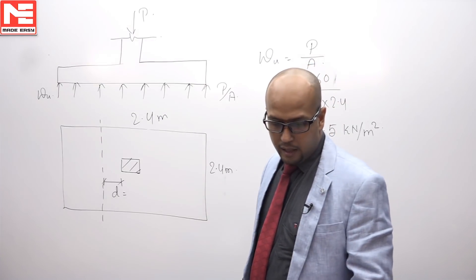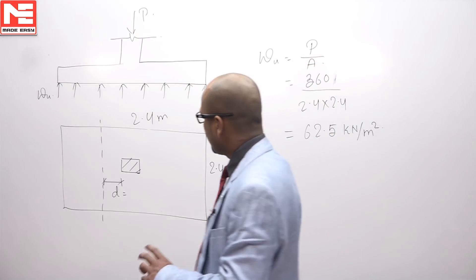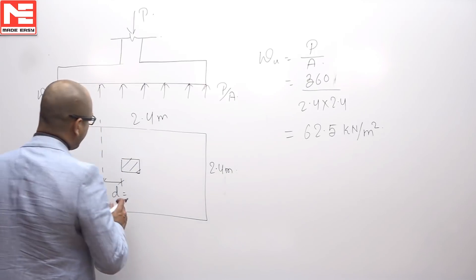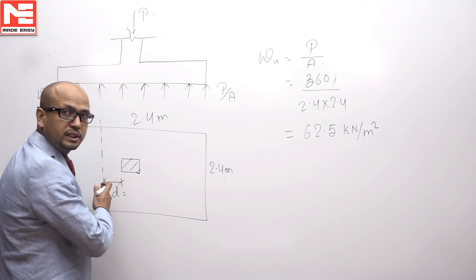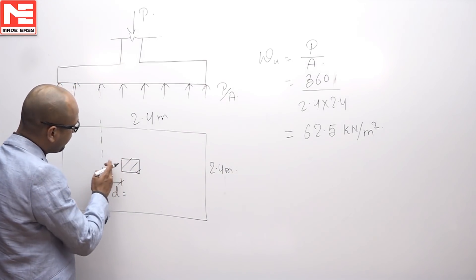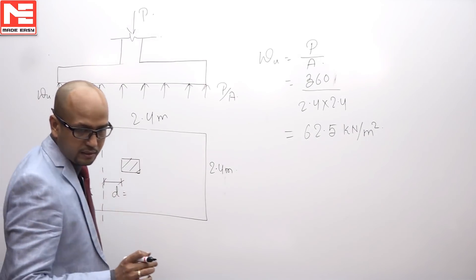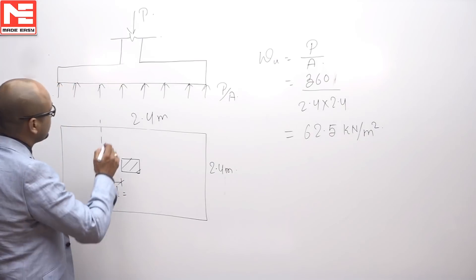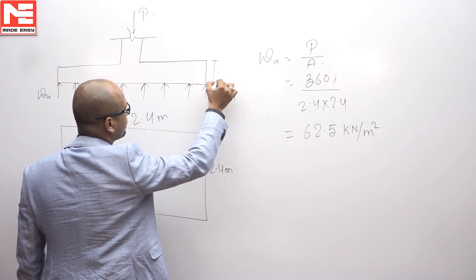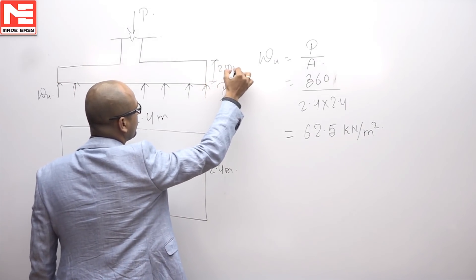Then after you have to calculate one way shear stress. As we know that critical section for one way shear is at a distance d from the face of column. This is the effective depth and effective depth is already given in the question that is 250 mm. This depth is 250 mm.